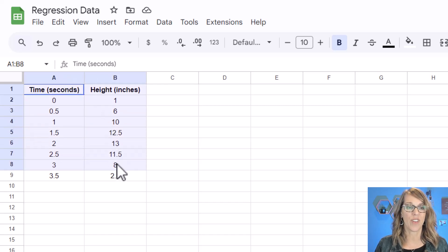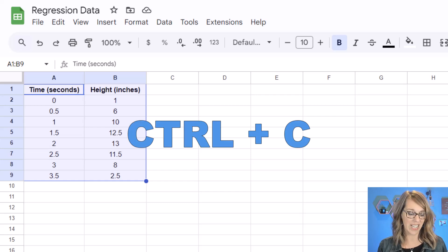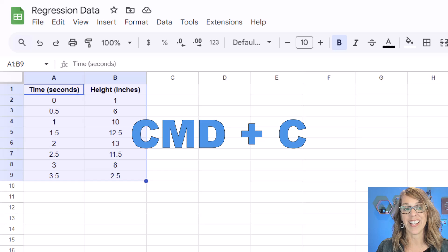I'm going to copy my data by first highlighting it. So I'm going to click, hold, and drag through my data. And then I'm going to do a Control C. If you're on a Mac, you'd want to do a Command C.